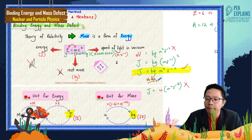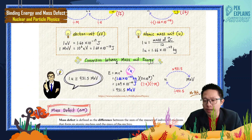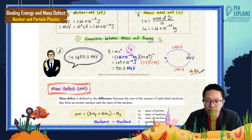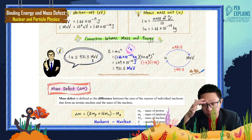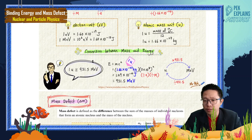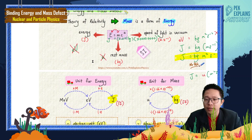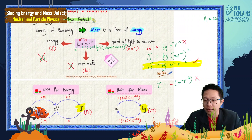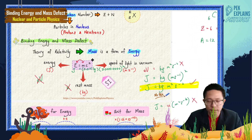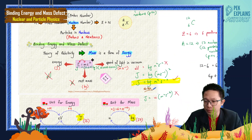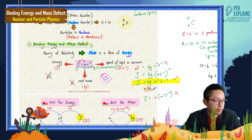There are other ways to convert atomic mass unit to mega electron volt directly, and I will teach that in the following videos. That is all for this video — let's move on to the next one.